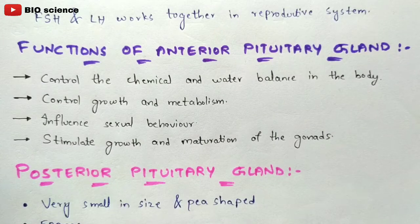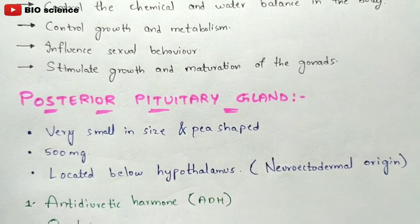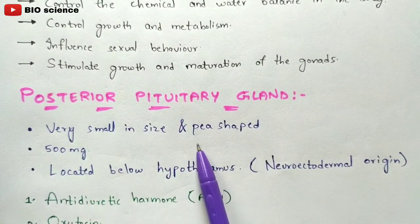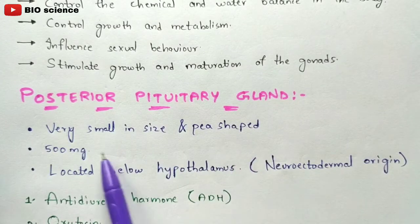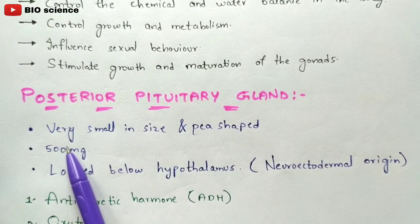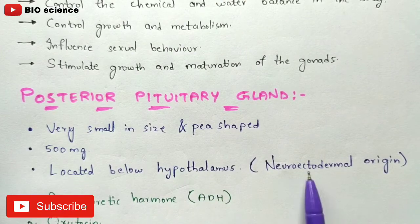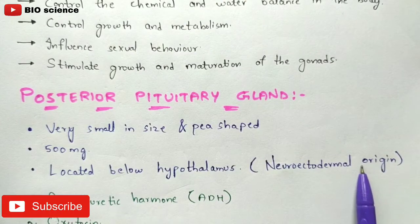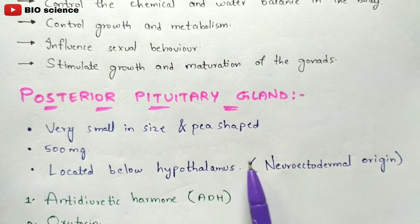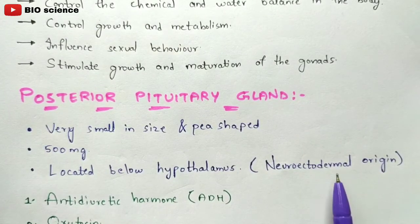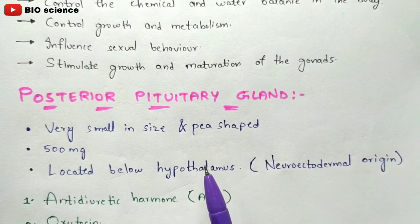Now let us discuss the posterior pituitary gland, also called neurohypophysis. It is very small in size and P-shaped, with a weight of around 500 milligrams. It is located below the hypothalamus and is neuro-ectodermal in origin, whereas the anterior lobe is ectodermal in origin.